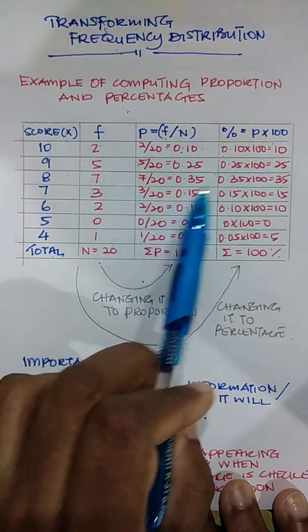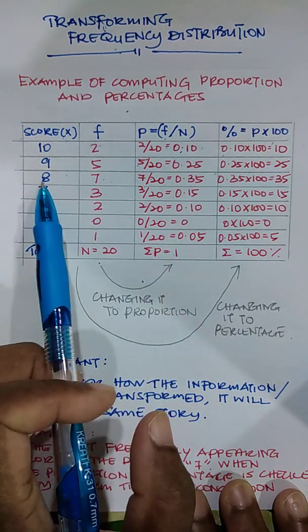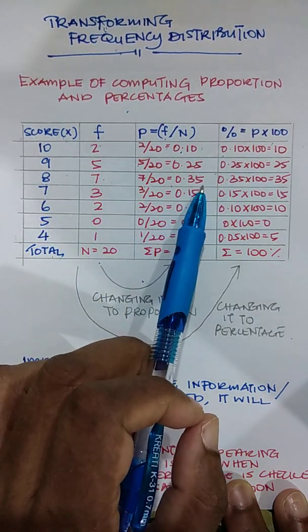So what does the proportion tell us? Which of the scores has the highest proportion? Number 8 because it has 0.35.